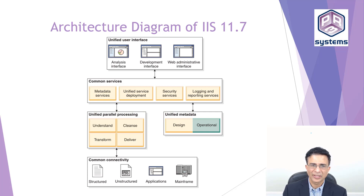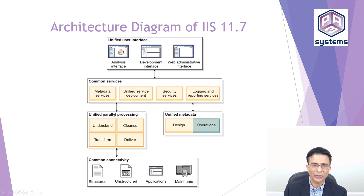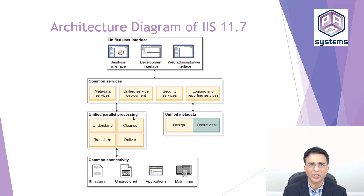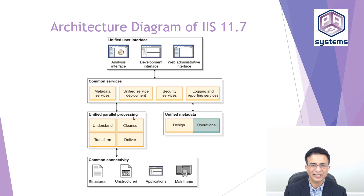These interfaces use a lot of services like metadata services, unified service deployment, security services, and logging and reporting services — all provided by WebSphere Application Server. Further down we have unified parallel processing. Information Server has a dynamic parallel processing engine where the degree of parallelism can change at runtime. So if you design a job in a symmetric multiprocessing system, you can run it in a clustered environment just by changing the configuration file.